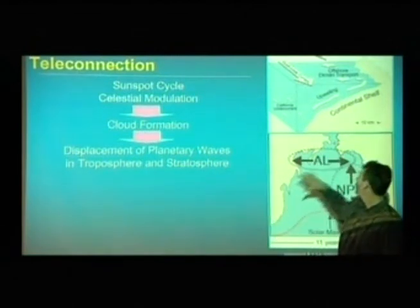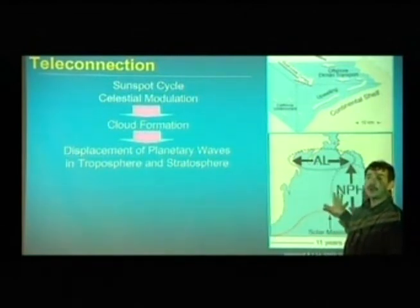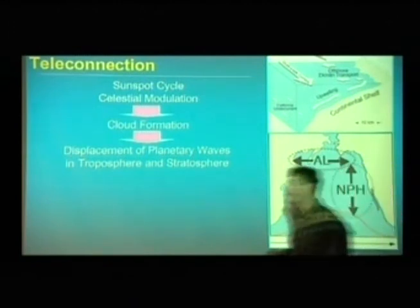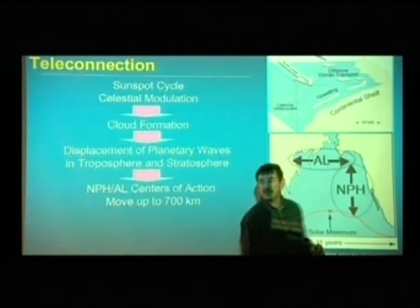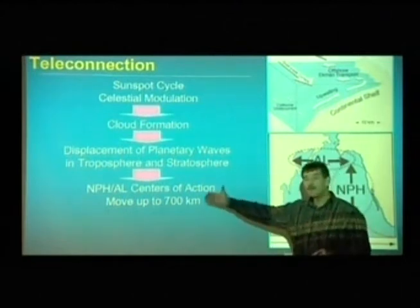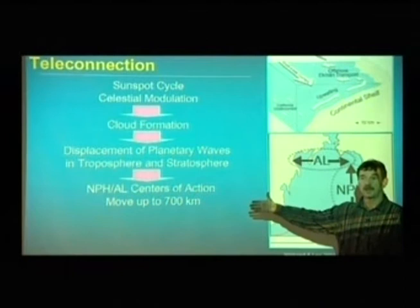This has a big impact upon what's happening with the Aleutian low and the North Pacific high. This has the correlation rate here, impacting the center of formation of the North Pacific high and Aleutian low, which are moving by up to 700 kilometers across the sunspot cycle.